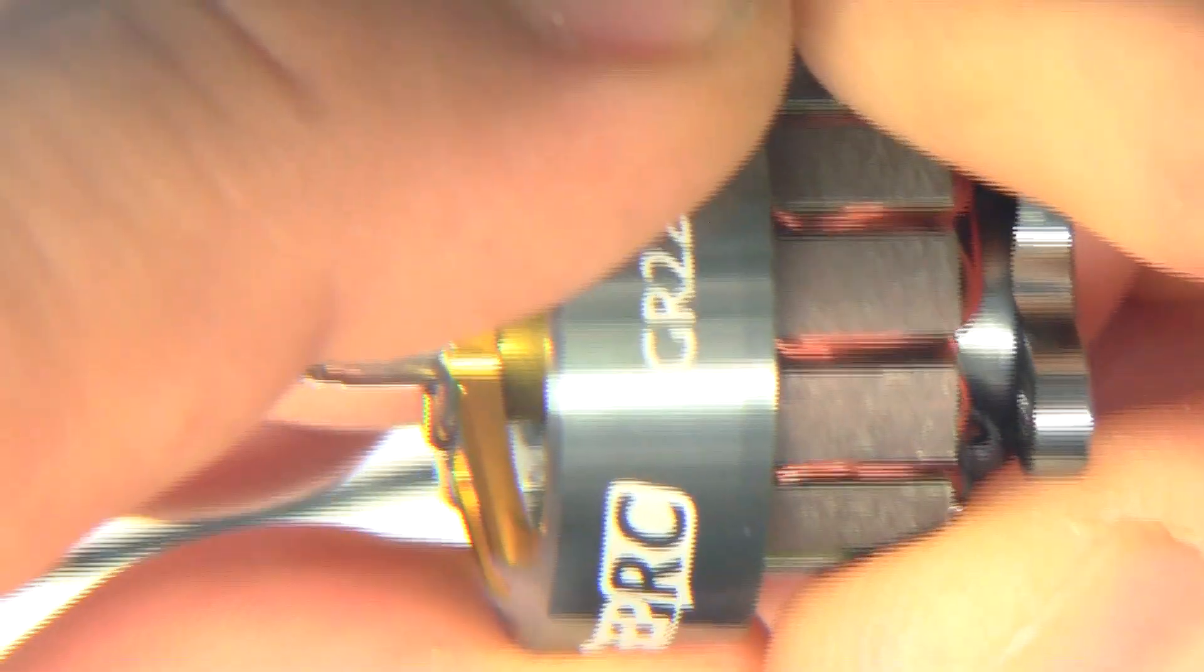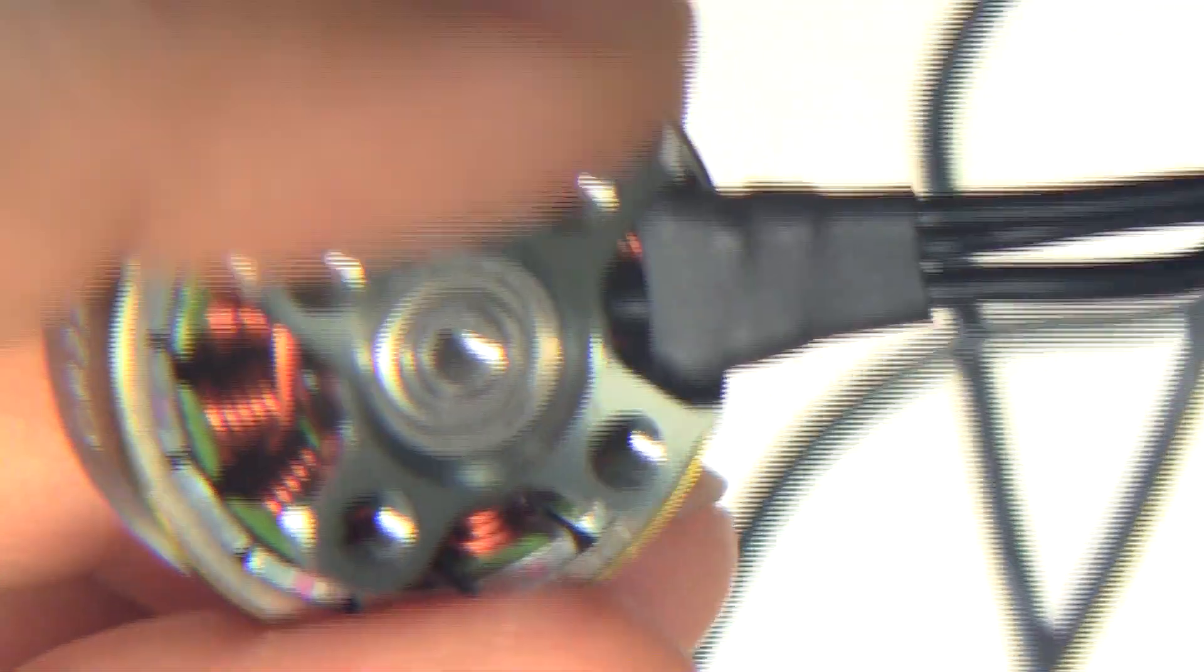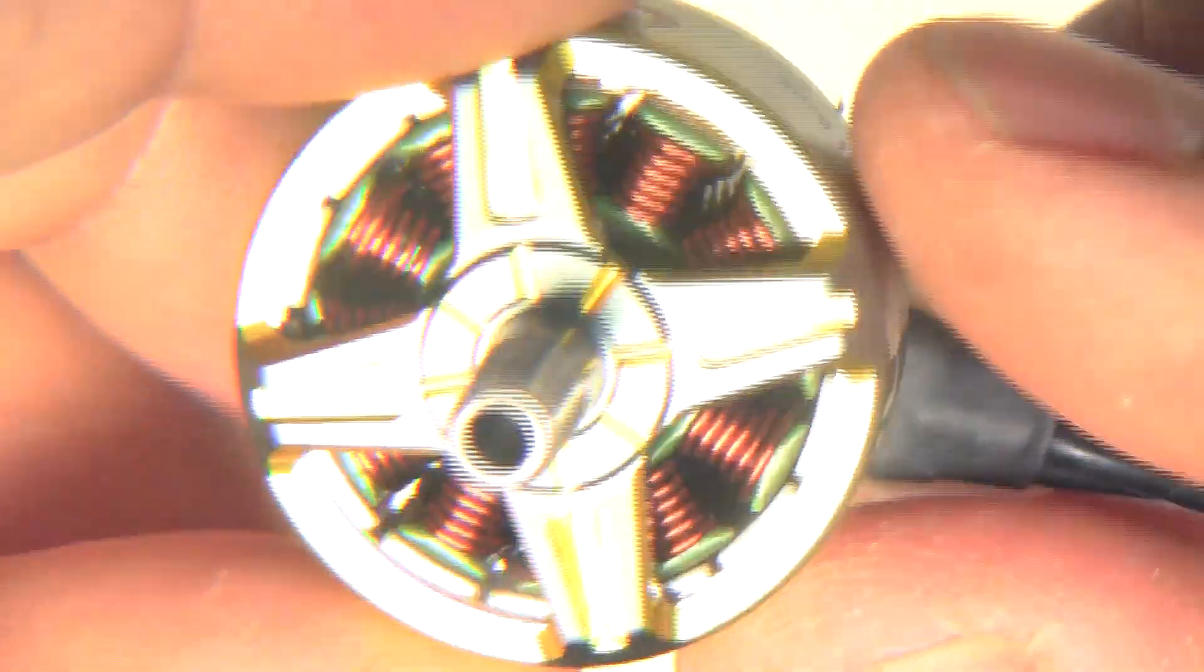So all right, put it back carefully, try not to let it slam. So there it goes. Some of the threadlock I think had overspilled on the between the shaft and the bearing, so that kind of made it difficult to pull out. All right, so that's the teardown of this motor. Let's see what it can do.